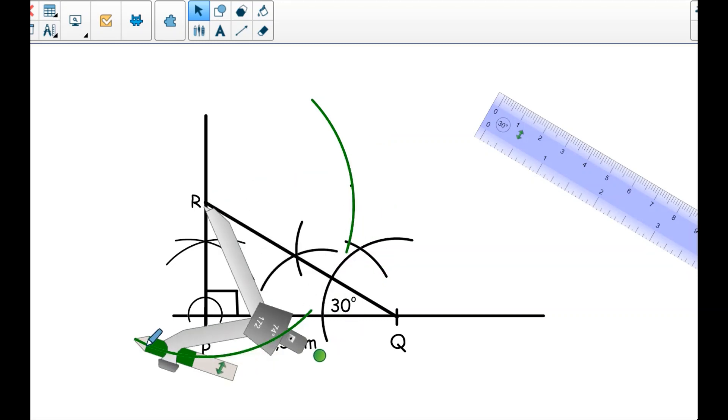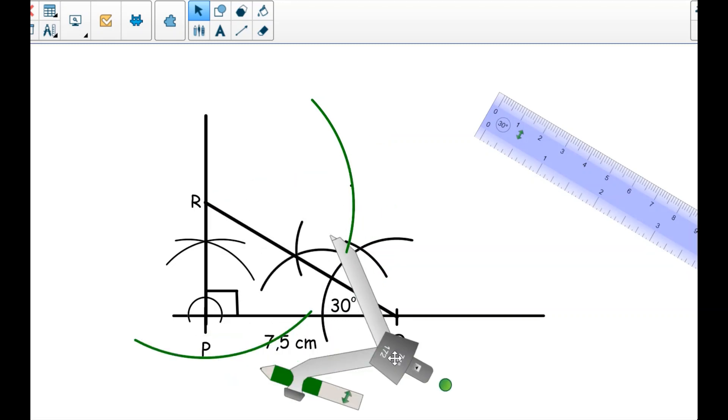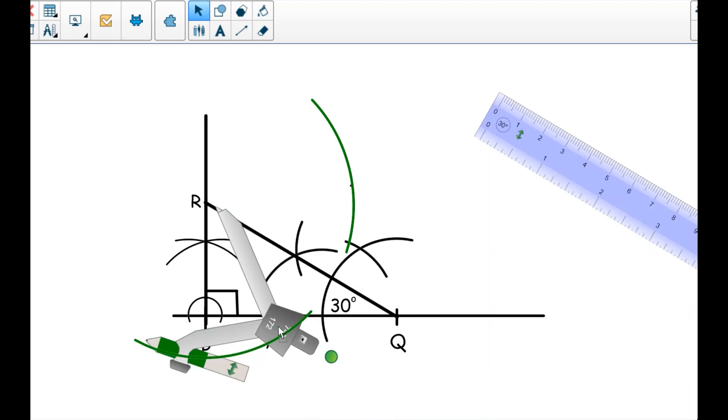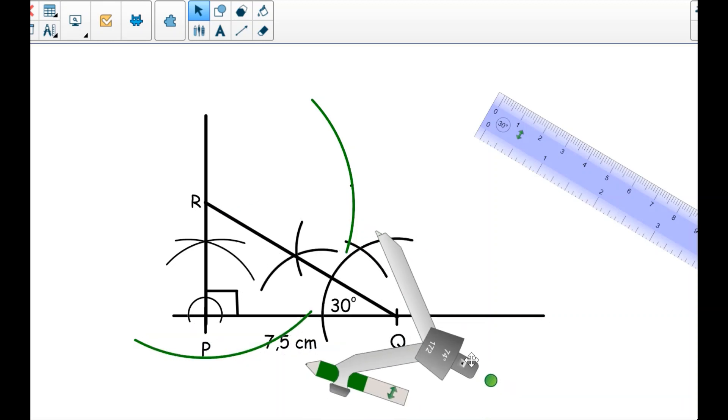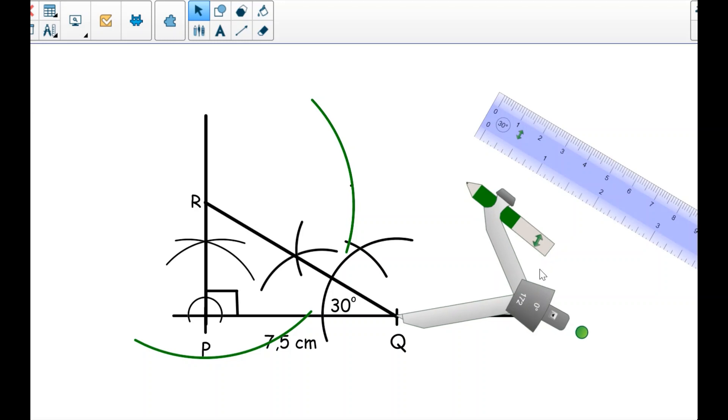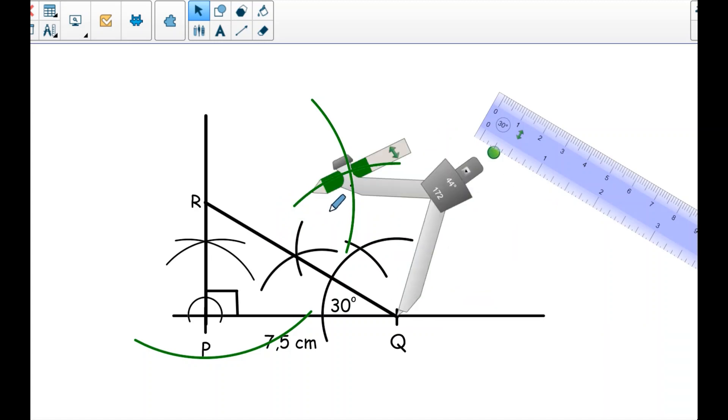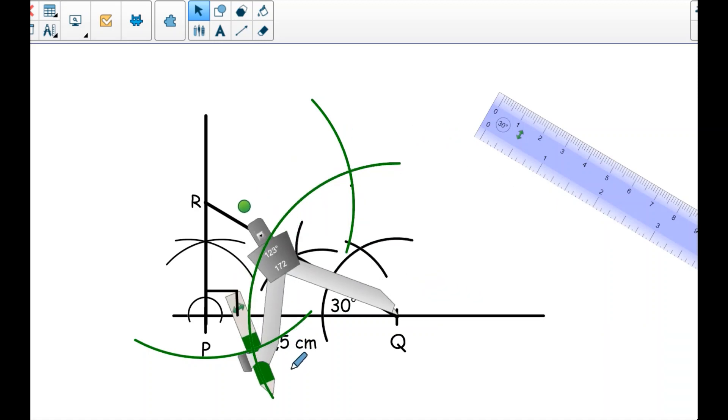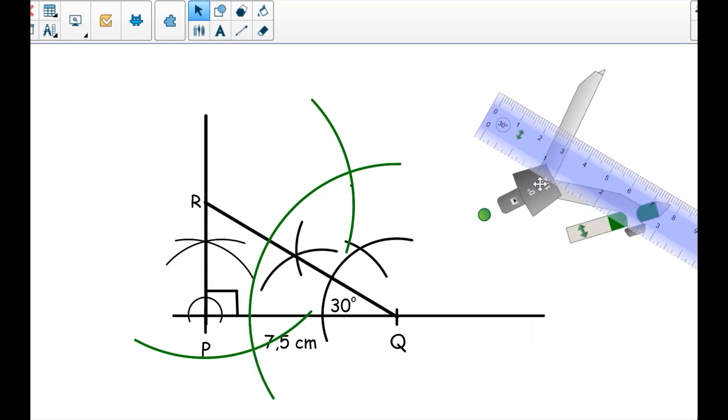These are the arcs from the side of R. Then I go to the side of Q. I also do the same on the side of Q. Let me switch my compass. I'll go on point Q, then I will construct an arc.